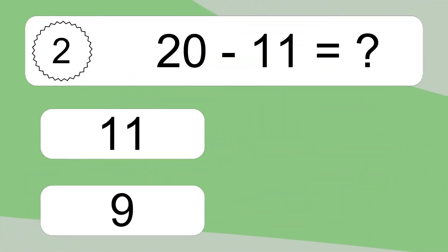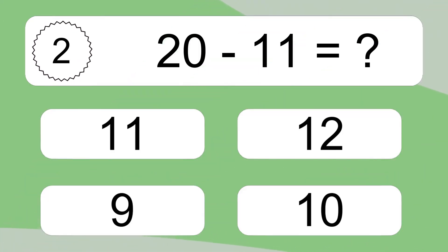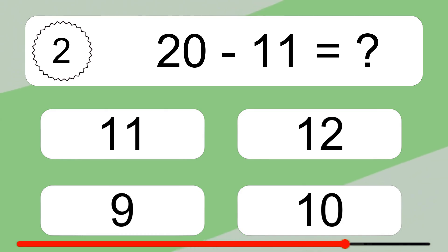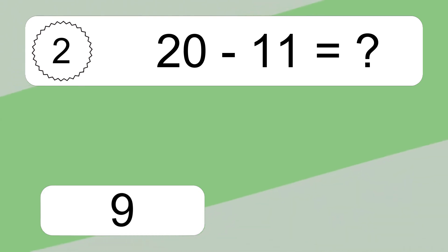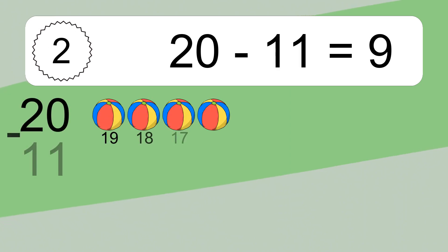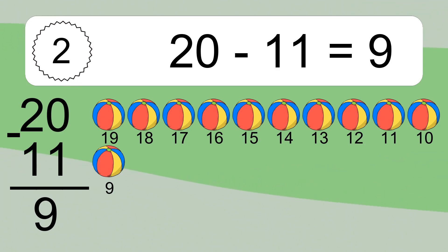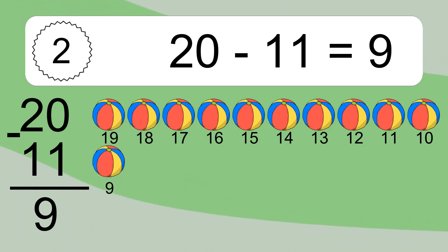20 minus 11 equals what? 20 minus 11 equals 9. Let's count it: 19, 18, 17, 16, 15, 14, 13, 12, 11, 10, 9.